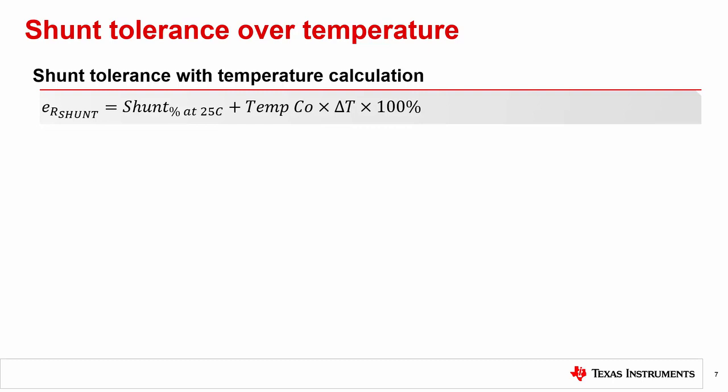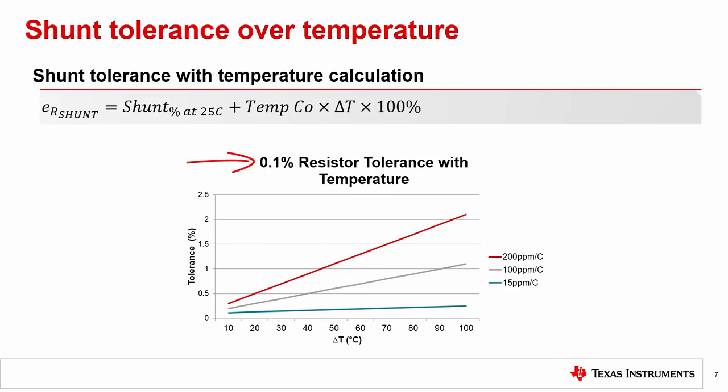So to see the drift impact of different drift coefficients, let's look at an example with some drift coefficients you may run across in a part distributor's website. Here we look at 0.1% at room temperature resistors. One has a drift coefficient of 15 ppm per C, another at 100 ppm per C, and last at 200 ppm per C. We expect the ambient temperature range to fluctuate by as much as 100 degrees Celsius. Based on these conditions, the max operating temperature for the 200 ppm resistor will result in nearly an additional 2% error, while the 15 ppm resistor adds 0.15% to the initial 0.1% error. What becomes evident is that for high accuracy shunts, the temperature coefficient can become the dominant error source.